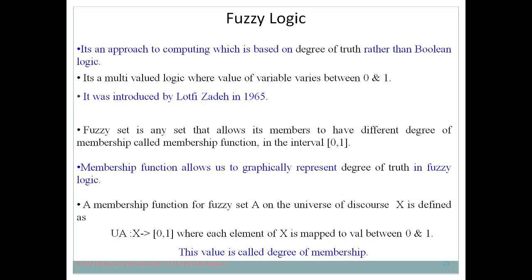Fuzzy logic can be defined in multiple ways. Simply, fuzzy logic is a multi-valued logic where the value of a variable lies between 0 and 1. Traditionally we have boolean logic, which can represent exact things because boolean logic works on the concept of 0 and 1, whereas fuzzy logic works on the concept of values between 0 and 1.